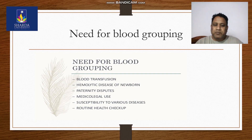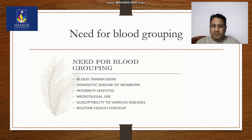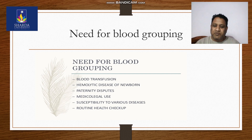Need for blood grouping: during blood transfusion, hemolytic disease of newborn, paternity dispute, medical legal use, susceptibility to various diseases, and routine health checkup. Blood grouping is a very important part in a hospital or pathology because sometimes patients come — gunshot or accidental patients who have lost so much blood. We have to immediately conduct the blood group, send it to the blood bank, and it is required for transfusion.